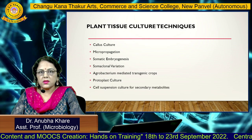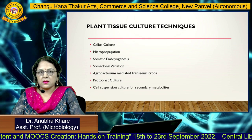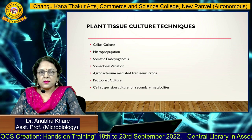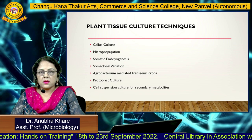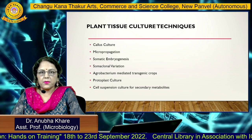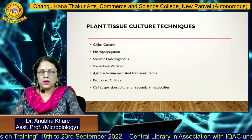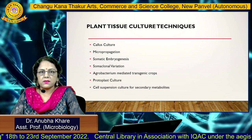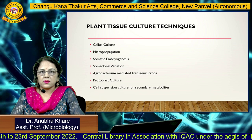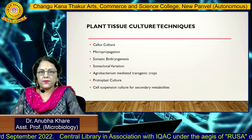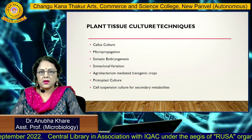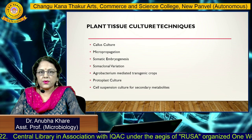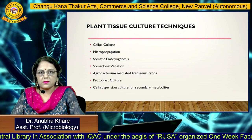Different types of plant tissue culture techniques include callous culture, micropropagation, somatic embryogenesis, somaclonal variation, Agrobacterium-mediated gene transfer, transgenic crops, protoplast culture, and cell suspension culture for production of different types of secondary metabolites.